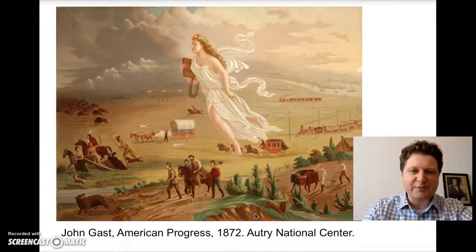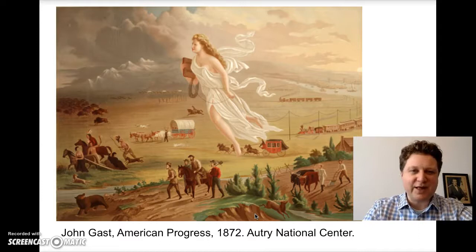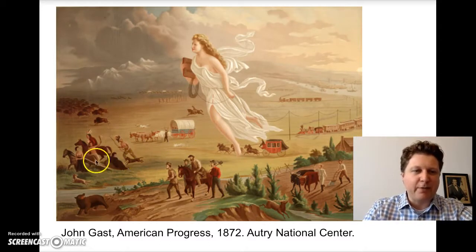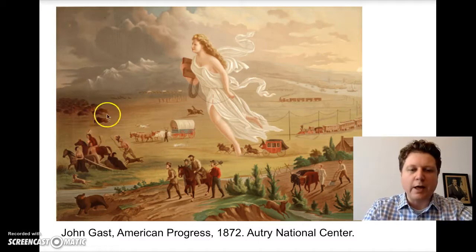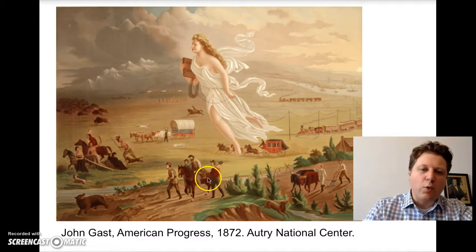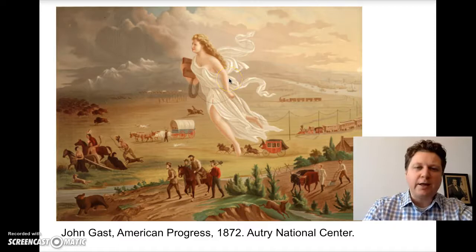This is American Progress, perhaps the most iconic image of the American West. Teachers often use this in class and have students point out the various elements. For example, they might point out the Native Americans and the buffalo running away, or these white miners moving westward, or this enormous white lady representing American progress and empire.